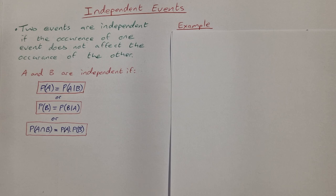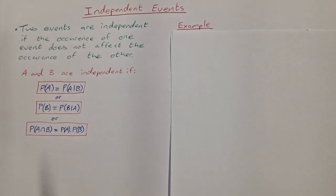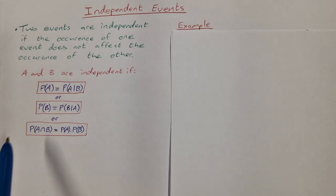For example, if you flip a coin and roll a die, obviously flipping the coin isn't going to affect your outcome of getting a 1, 2, 3, 4, 5, or 6 on your die. There are three formulas that we can use to test if events are independent.